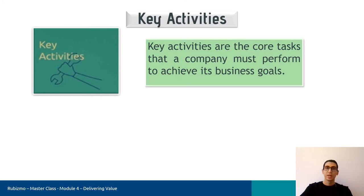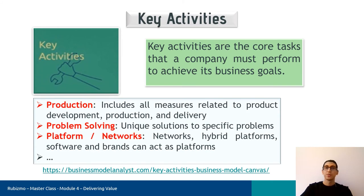The next component is key activities — the core tasks that the company must perform to achieve its business goals. A company can be engaged in different kinds: production, which includes all measures related to product development, production, and delivery; being an expert in something, such as finding a unique solution to a specific problem; or platform and network activities. If you remember, in the case Pania Loka, the company constantly strives to be active through upgrading its platform.